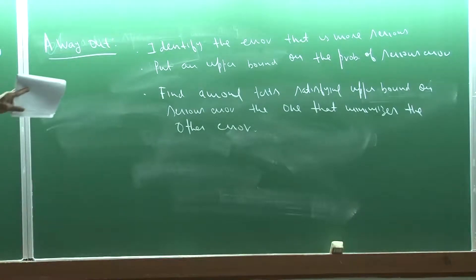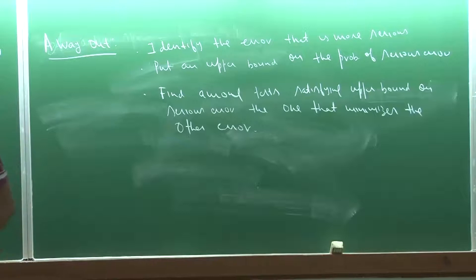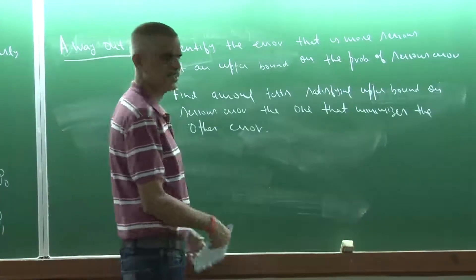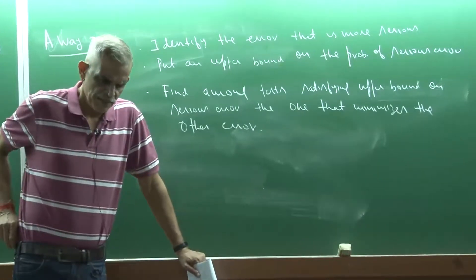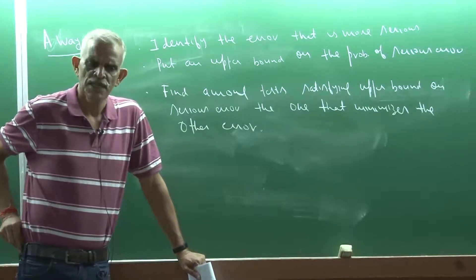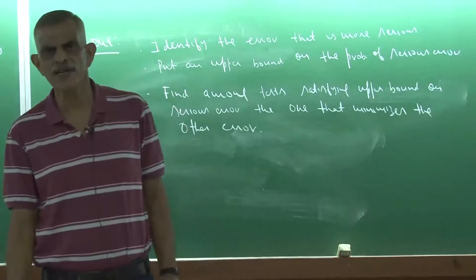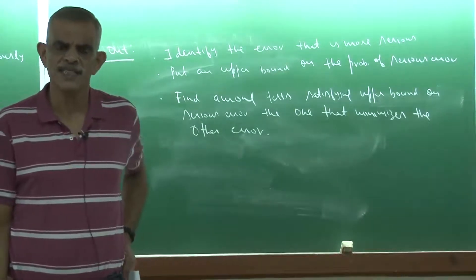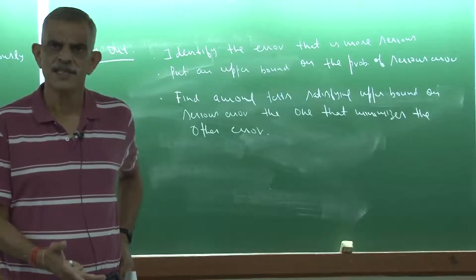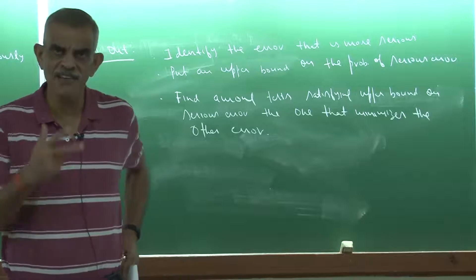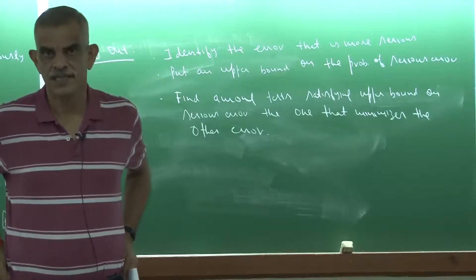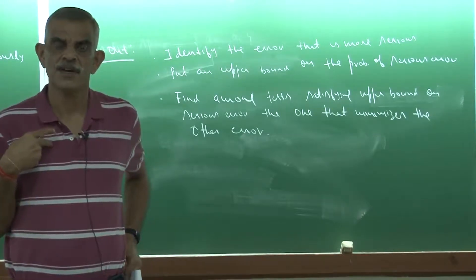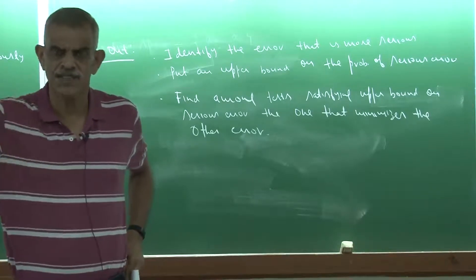A test φ is said to be of level α if E_f[φ(x)] ≤ α for every f ∈ P₀, meaning the probability of Type 1 error is always ≤ α. For a fixed α ∈ (0,1), define D_α as the class of all tests φ such that E_f[φ(x)] ≤ α for every f ∈ P₀ — the class of level-α tests. The goal is to find a test φ₀ ∈ D_α such that its probability of Type 2 error is minimum.